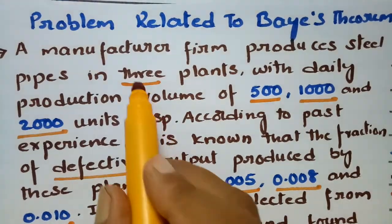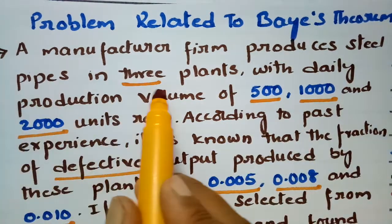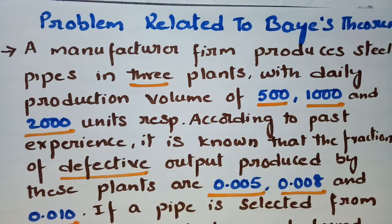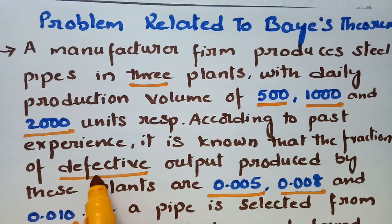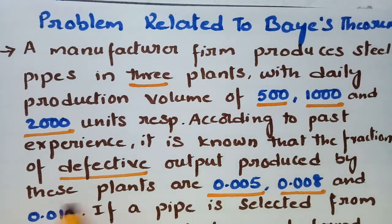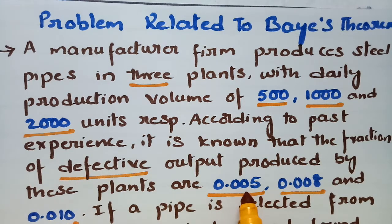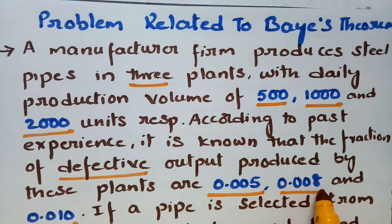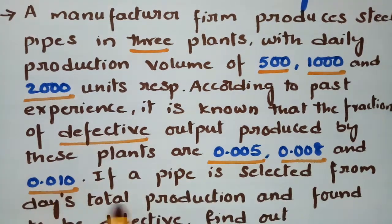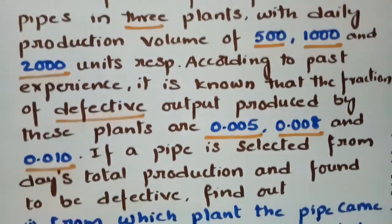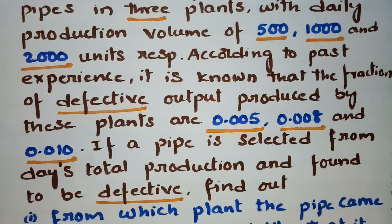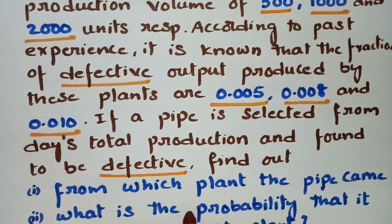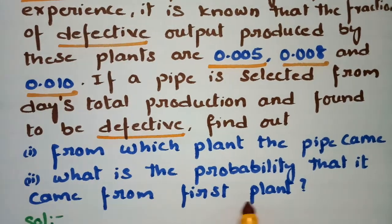There are three plants here. If a pipe is selected from the day's total production and found to be defective, we need to find out from which plant the pipe came, and what is the probability that it comes from the first plant.